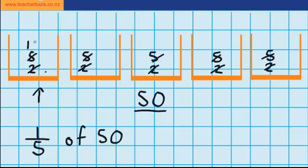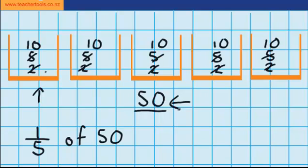I could put 10 in each of these containers. So now I'm going to skip count again: 10, 20, 30, 40, 50. Perfect, that's all the tennis balls shared out. I've got an even amount in each of my containers. So the answer to 1 fifth of 50 is 10.